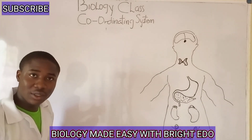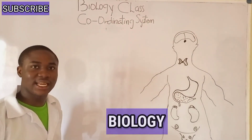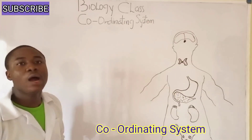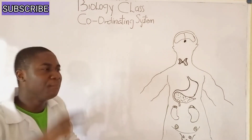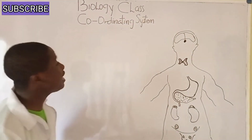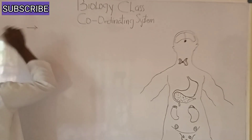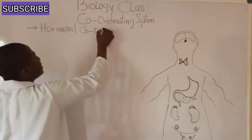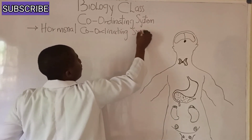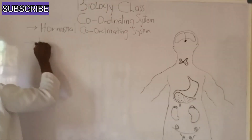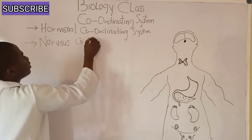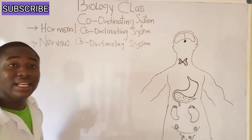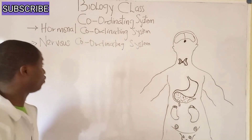Welcome to my first video lesson under the course biology. In today's video lesson, I'll be teaching on a very important topic called the coordinating system. The coordinating system is basically a system that controls how the body works, and there are majorly two types: the hormonal coordinating system and the nervous coordinating system. In today's class, I'll be teaching on just the hormonal coordinating system.